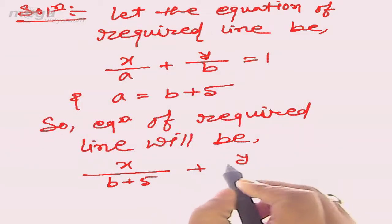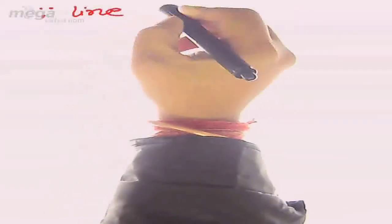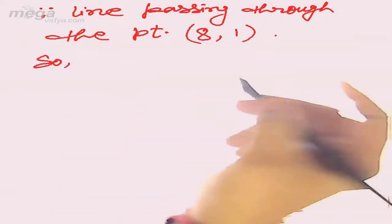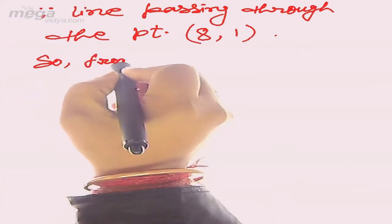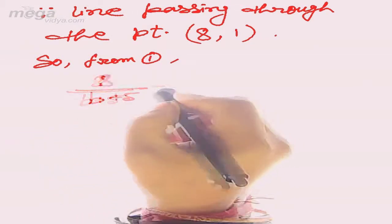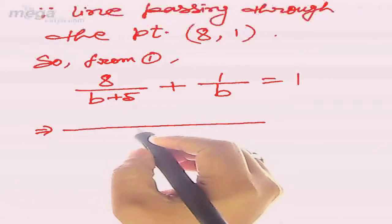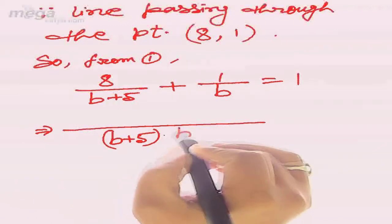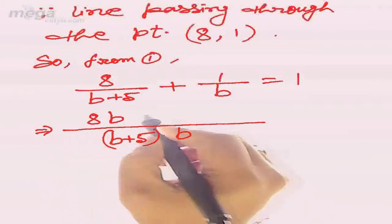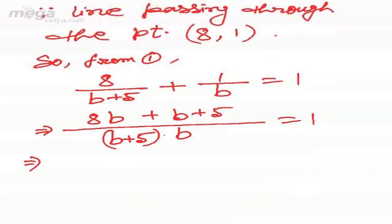The equation becomes x/(b+5) + y/b = 1. We find the value of b using the condition that the line passes through the point (8, 2). Substituting: 8/(b+5) + 2/b = 1. Taking the LCM as b(b+5), we get 8b + 2(b+5) = b(b+5), which after simplification gives 8b + b + 5 = b² + 5b.